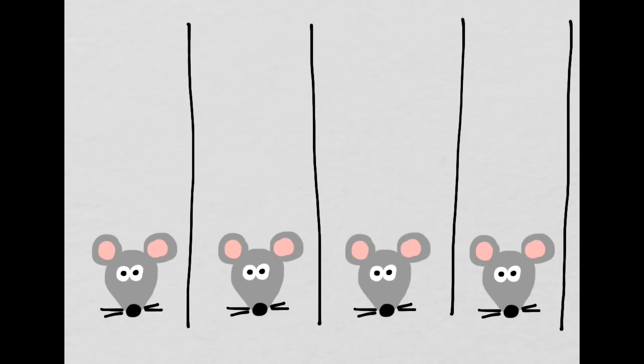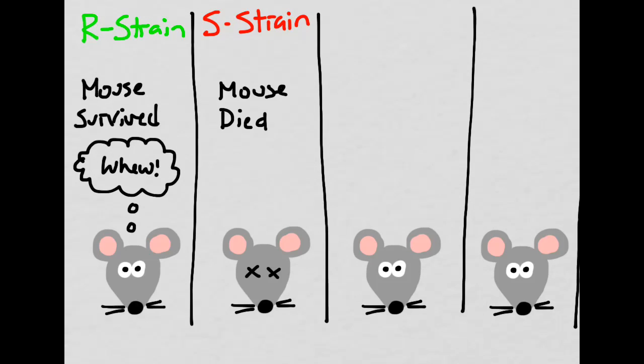Griffith tried four different combinations. He first injected the R strain into a healthy mouse and the S strain into a healthy mouse. Predictably, the mouse involved with the R strain survived. The mouse who was injected with the S strain died. This was fairly predictable, but the next two steps show why Griffith's experiment was groundbreaking.